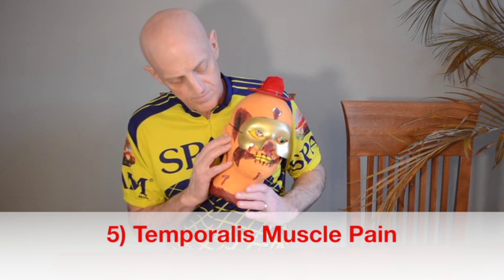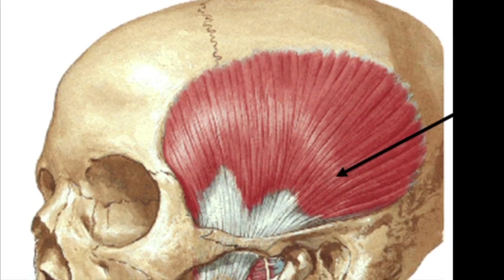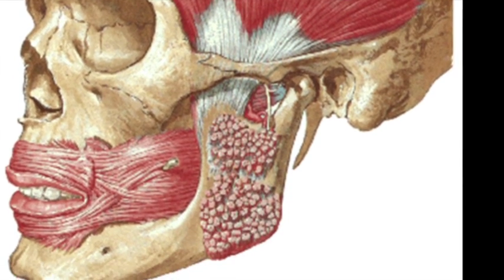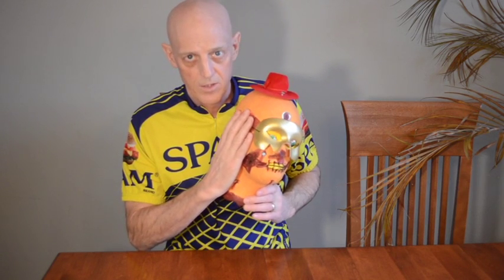Number five — and this is something I've actually had myself — is temporalis muscle pain. Mr. Bubbles, when he chews, has to close his jaw. One of the muscles that helps with that runs right up underneath the arch of the cheek and fans out to this area. That muscle can become inflamed and sore like any muscle, and people will often say, when I chew or eat, I get this headache there. Sometimes it's just the muscle.